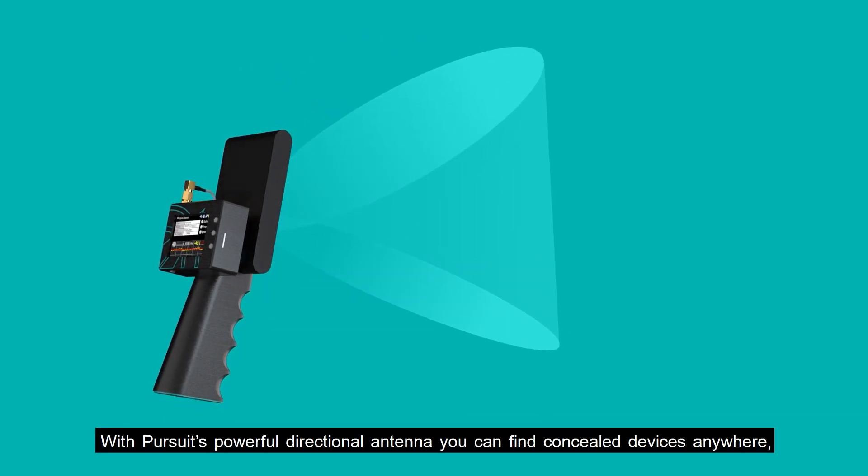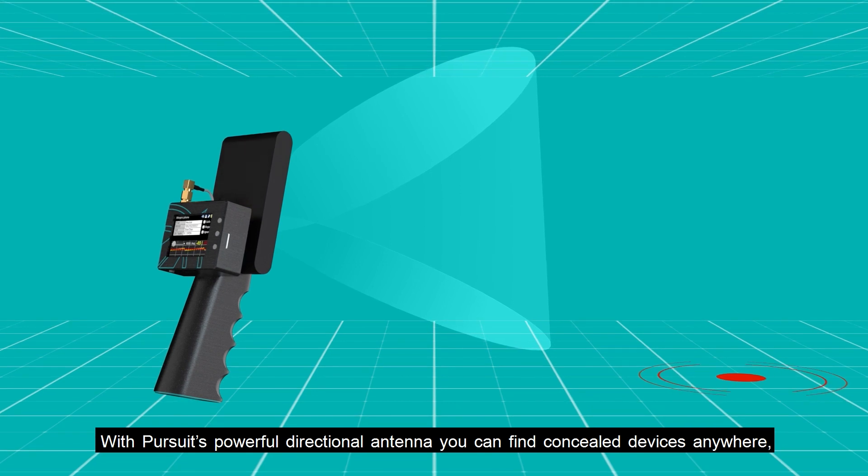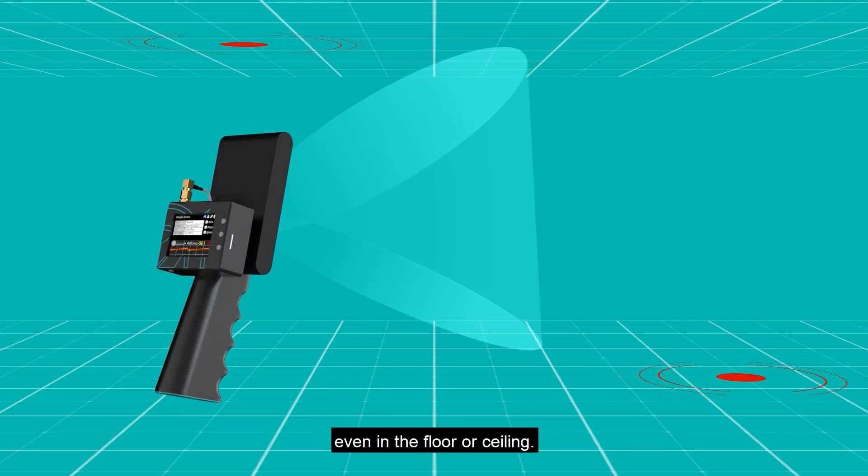With Pursuit's powerful directional antenna, you can find concealed devices anywhere, even in the floor or ceiling.